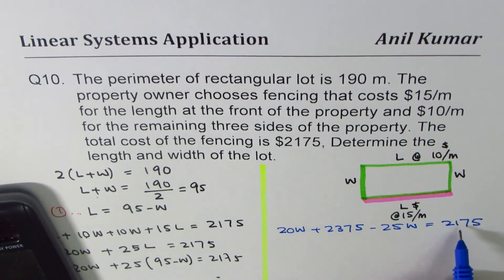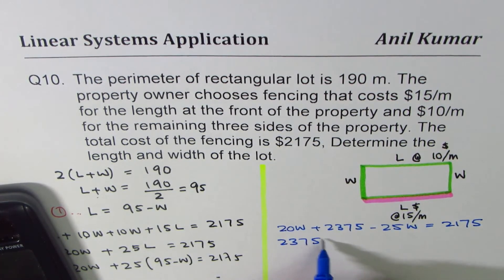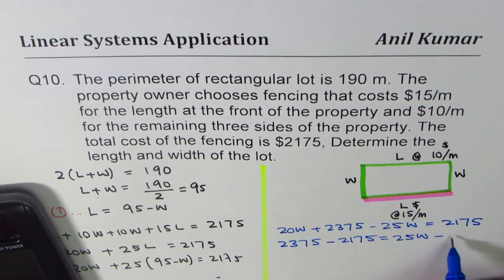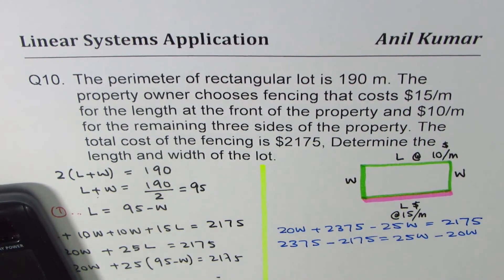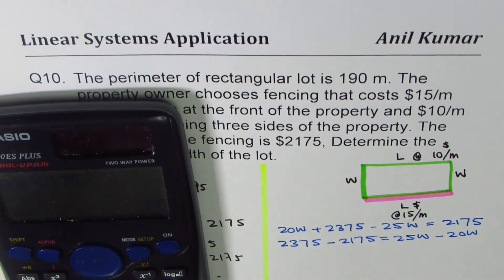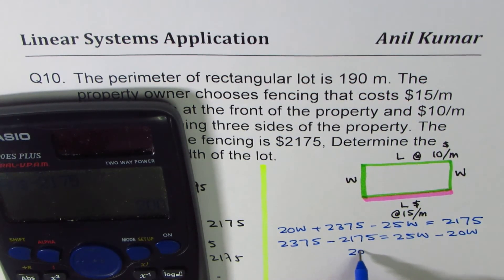Now let's bring constants to one side, variables on the other. So we have 2375 minus 2175. Let's do this difference. 2375 minus 2175 equals to 200. So we have 200 equals to 5W.